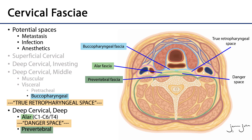We're looking here at a transverse section of the neck — here is anterior, here is posterior. We can see from the orientation of this particular cervical vertebra the various neck muscles, viscera, and compartments within the neck.